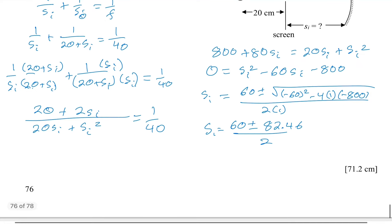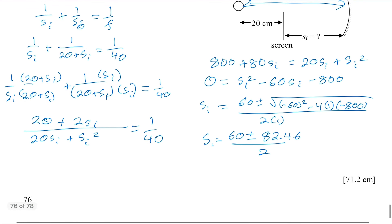So, if we do... Let's see, how much room have I got here? I've got just barely enough room. If we do 60 plus 82.46 and divide by 2, we get 71.2. Now, what happens if we do 60 minus 82.46? Well, 60 minus 82.46 is going to be a negative number. Divided by 2 is a negative number.